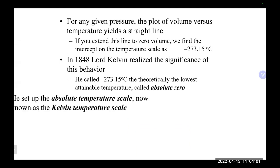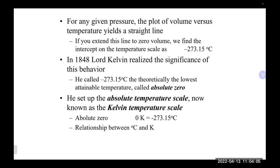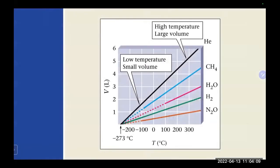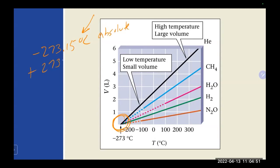There's an important relationship seen on a graph of volume versus temperature for Charles's Law. If you graph any gas and extend the lines back to the temperature axis, every single gas hits the exact same number: −273.15 degrees Celsius. That's the number we use to convert to Kelvin — adding 273.15 gives zero Kelvin, which is absolute zero.